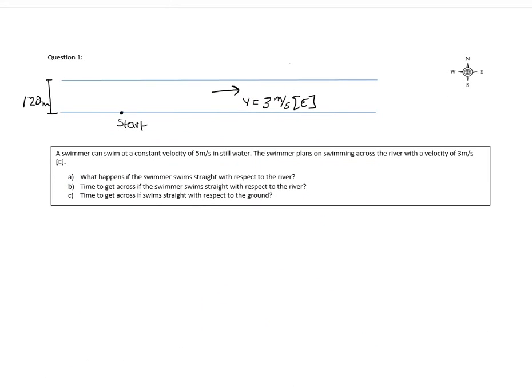Let's start with the first question. It says a swimmer can swim at a constant velocity of 5 meters per second in still water. The swimmer plans on swimming across the river with a velocity of 3 meters per second east. So basically what it's trying to say is that a swimmer can swim at a velocity of 5 meters per second in still water. So if the river is standing still, there is no velocity, he can swim 5 meters per second in any direction. The second part tells us that the river has a velocity of 3 meters per second east. So here's the compass and this is east.